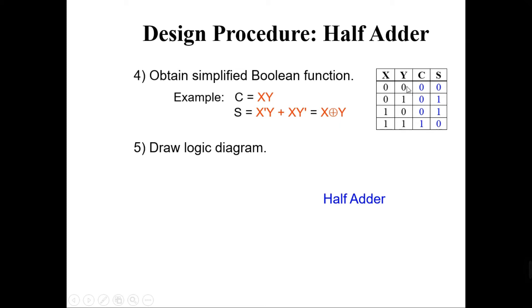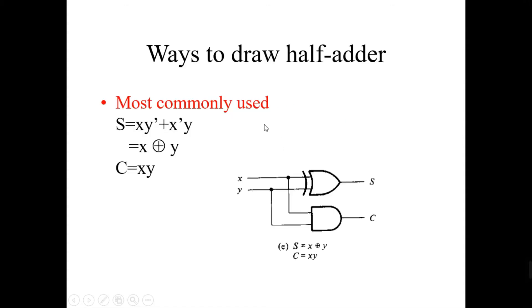This is the truth table for a simple half adder circuit. If you want to find the equations for both outputs C and S, the equations are: C equals X·Y, and S equals X'Y plus XY', which is actually equivalent to X XOR Y. So C = XY and S = X XOR Y — these are the output equations for a simple half adder circuit.